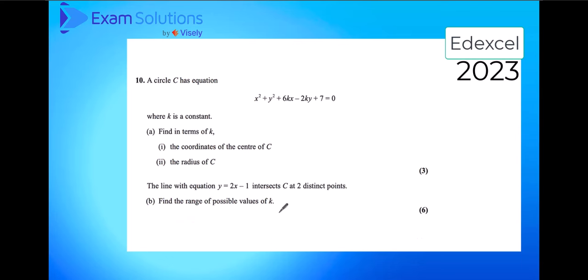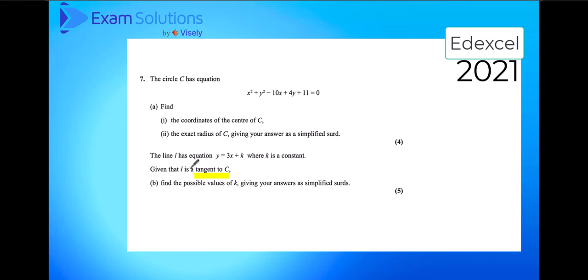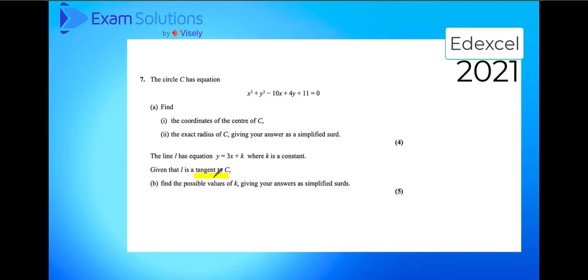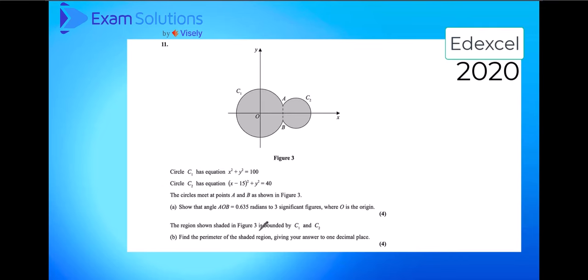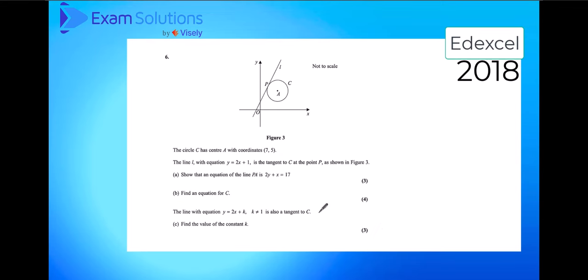We can see this in 2023 with a line intersecting, 2021 a line tangent, in 2020 intersection of circles, 2019 again circle intersection, and 2018 a tangent.